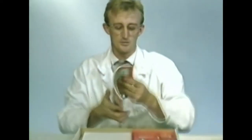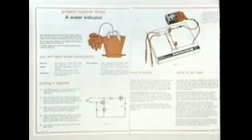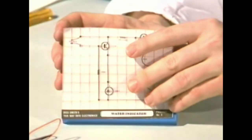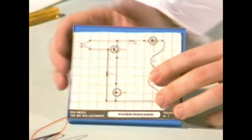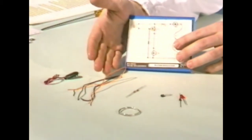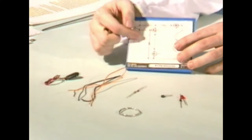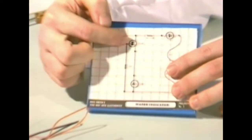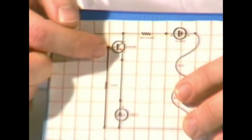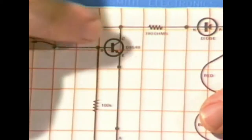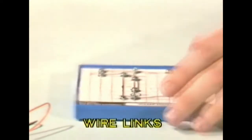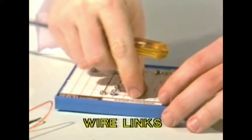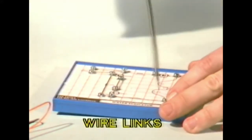Let's start with project number three — a water indicator. First, we cut out the circuit from the back of the book and paste it on the board, making sure it's smooth and firmly stuck. Once that's done, select all the components you're going to use and double check that they're the right ones. Building is really straightforward because the circuit diagram has been deliberately drawn with the connections and components exactly the way they'll be assembled. Each component fits over its own symbol. To start construction, we first join up the wire links — make sure the wire is well wrapped around the screw and under the washer when you tighten it up.